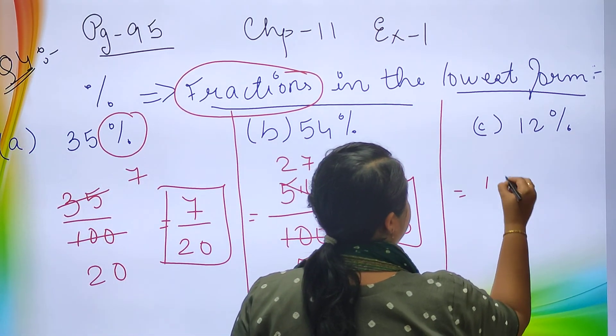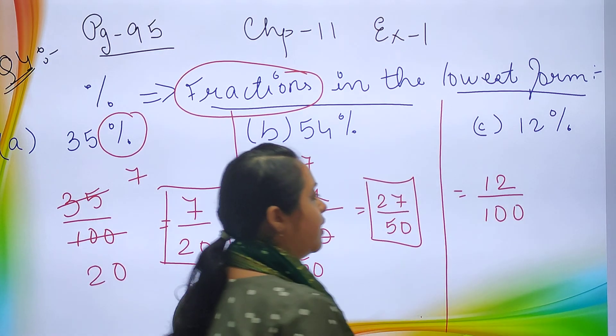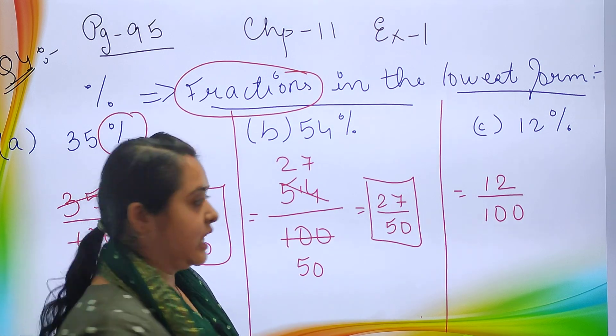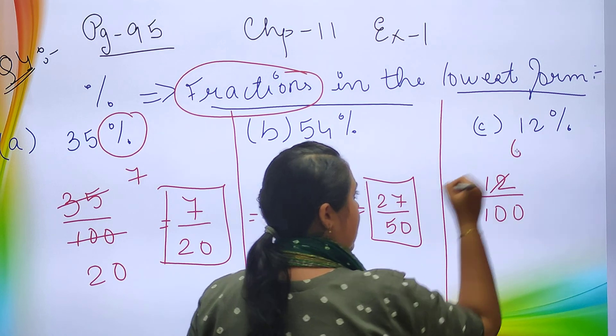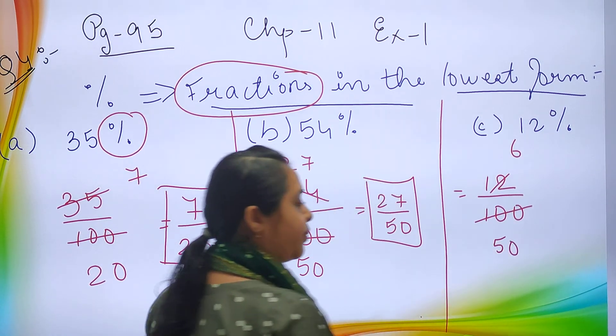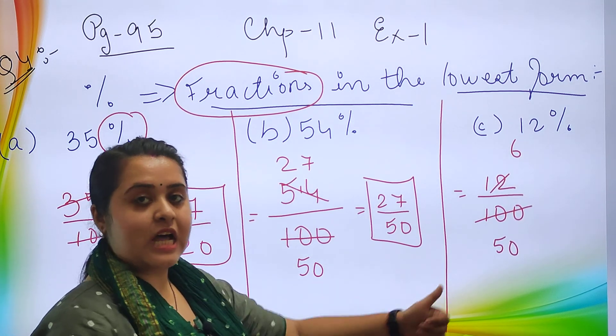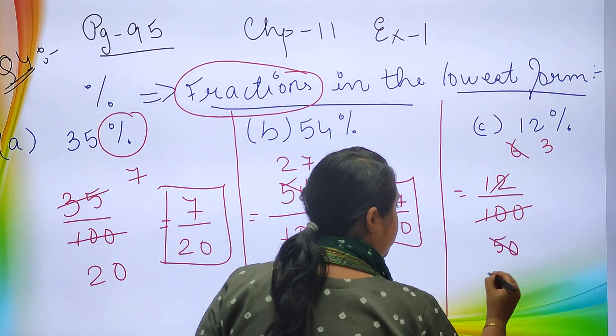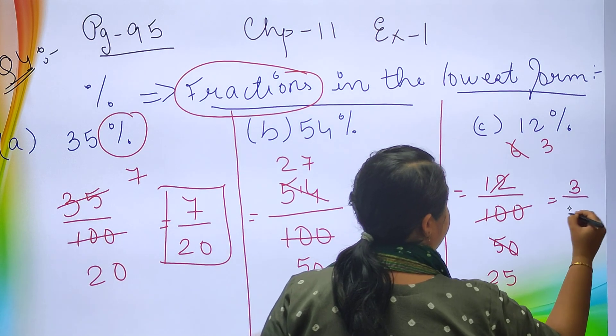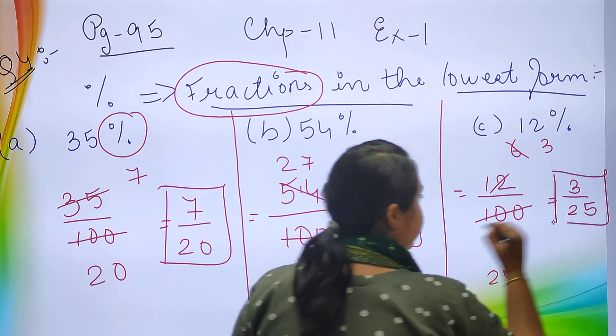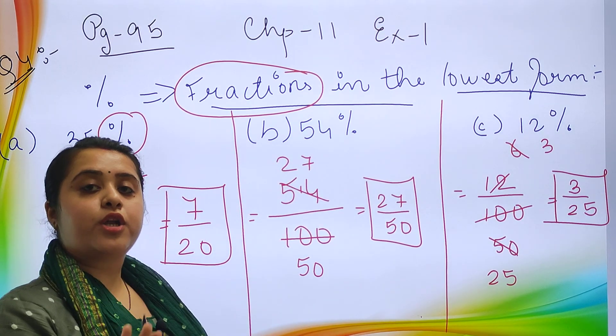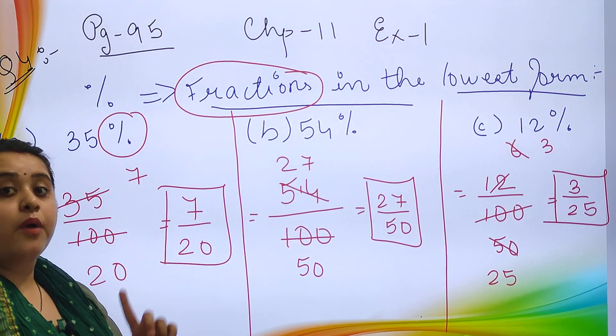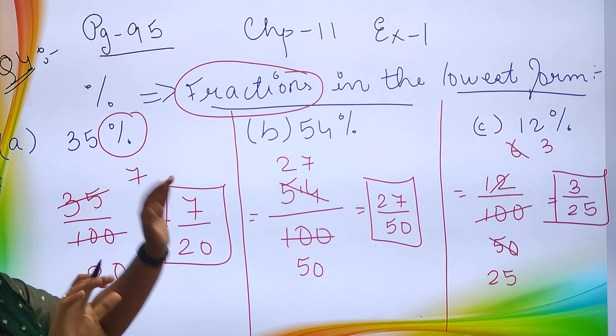Now let's move to the next one, that is 12 upon 100. 12 goes in the common table of 2. 2 times 6 is 12, 2 times 50 is 100. So your answer will be 3 upon 25. You are simply supposed to divide it with 100 because percentage is there.